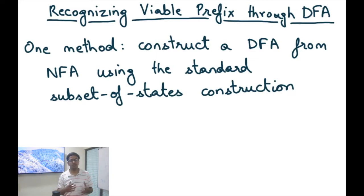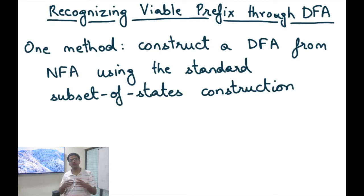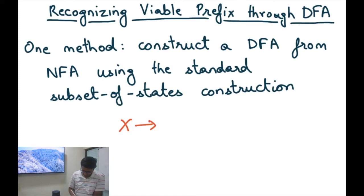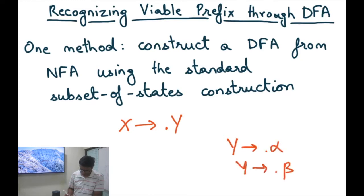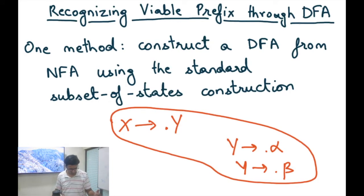It is somewhat easy to figure out what the DFA states would be. The NFA states were basically items, and these items needed to be related in some way to have transitions among them. The DFA states would typically be groups of items connected through epsilon moves in the NFA. For example, if there was an item like X→•Y, then all items like Y→•alpha and Y→•beta were reachable via epsilon moves. In the DFA, we consider this as one single state — the epsilon closure of the first state.